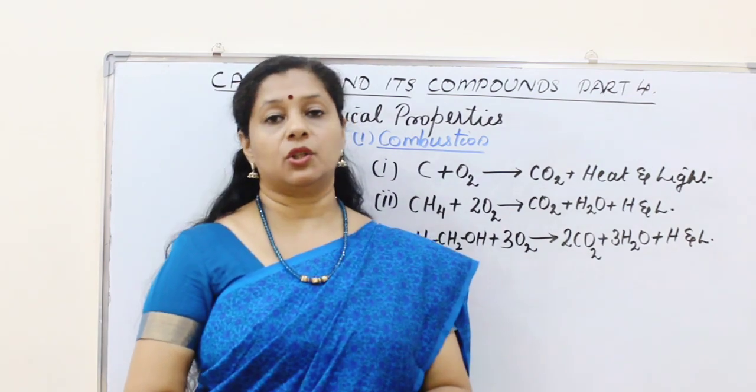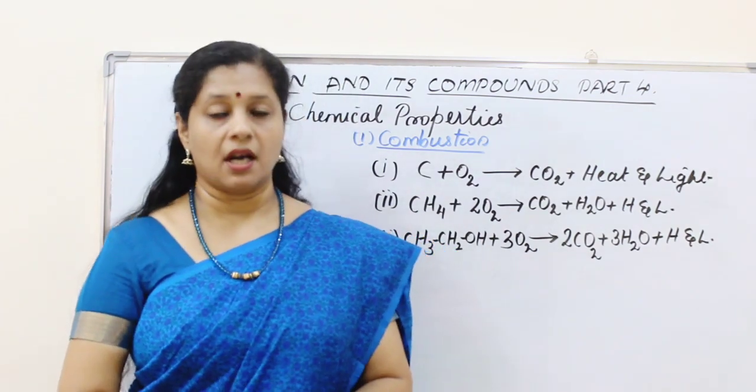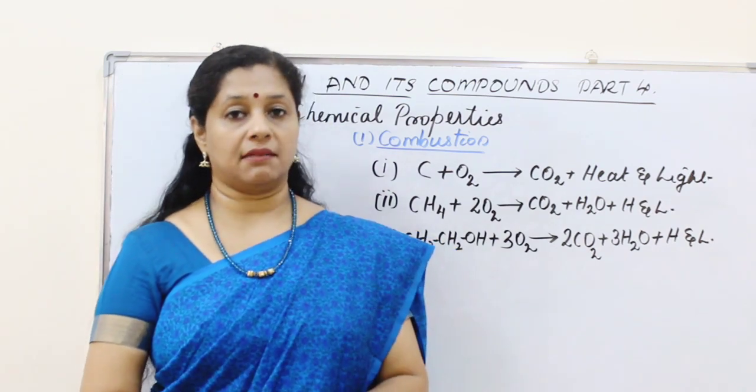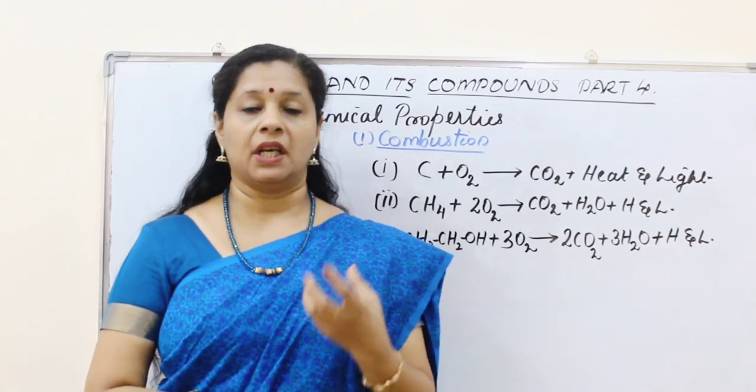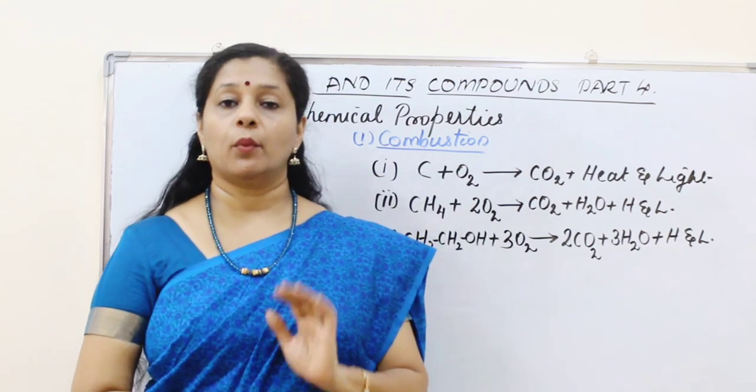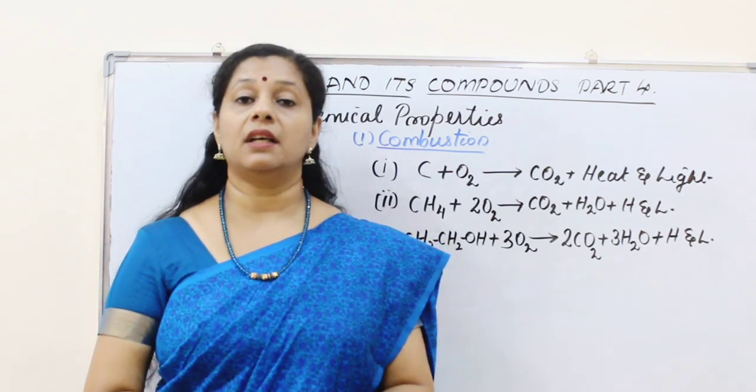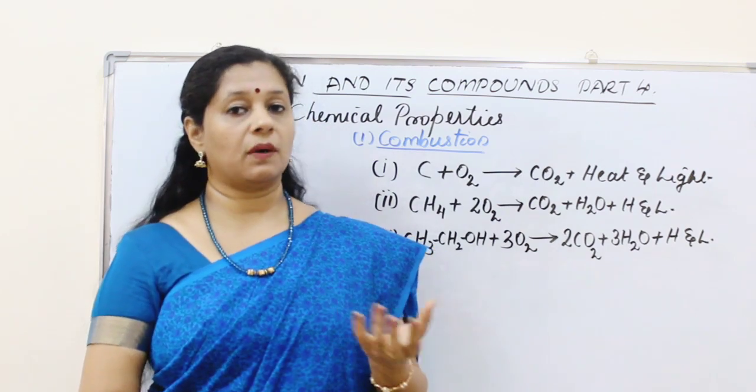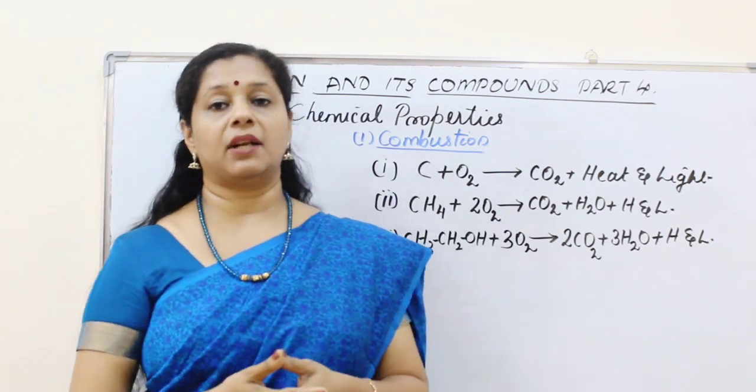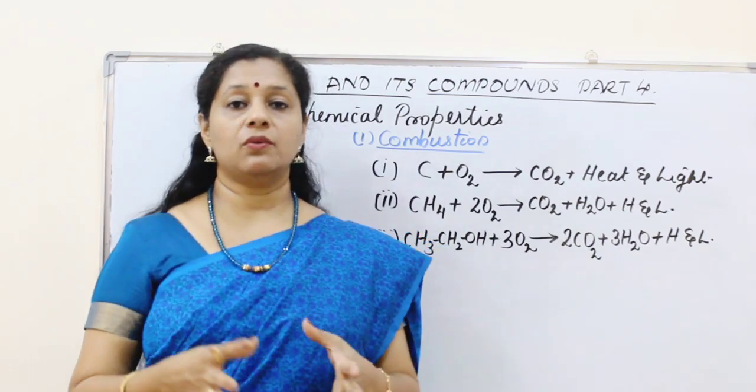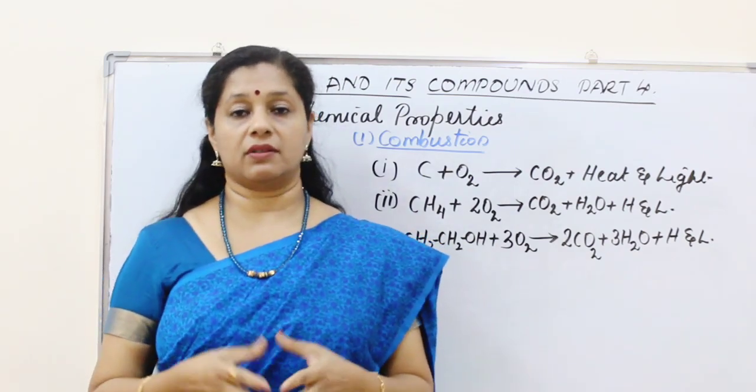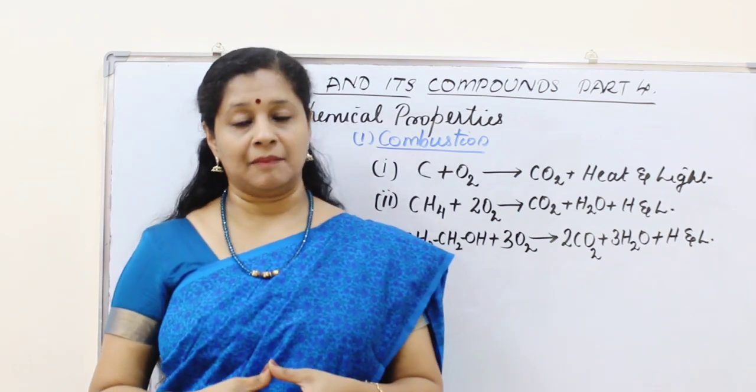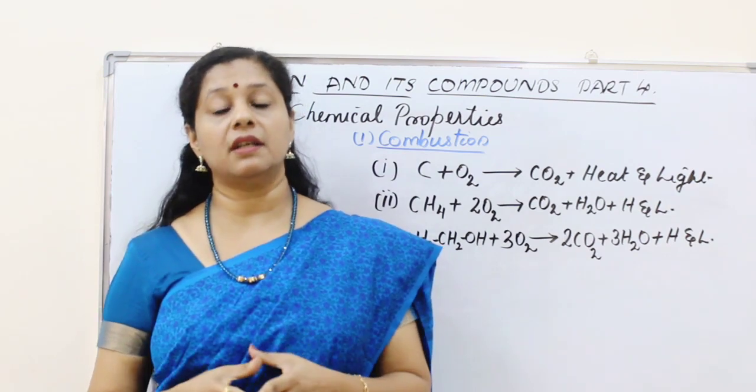But we learned about two types of hydrocarbons: saturated and unsaturated. Are they burning the same way? No, there is a slight difference. If it is a saturated compound, they will burn with a clean flame without any smoke. Whereas unsaturated compounds, they burn with a sooty flame and the flame will be yellow. Especially those who are using the ghee to burn the lamp, there won't be any smoke produced. But if you use other oils like gingelly oil or any unsaturated oil, you will feel that the soot is coming out. It is because unsaturated compounds burn with a sooty flame.